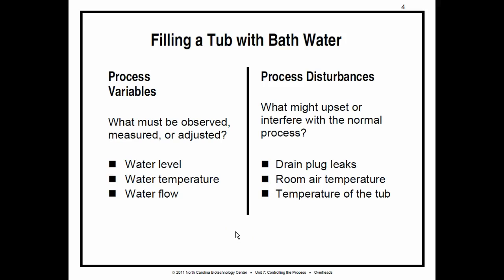On page 11, activity on process variables and disturbances. They're talking about filling a tub with bath water. The process variables that you have to do when using bath water is the level of the water, the temperature of the water, and the flow of the water. How fast is it flowing out? The things that can disturb the process is if the drain plug is leaking, then obviously every time you put water in the tub, water's going to be draining. So you're going to have to overcome that.